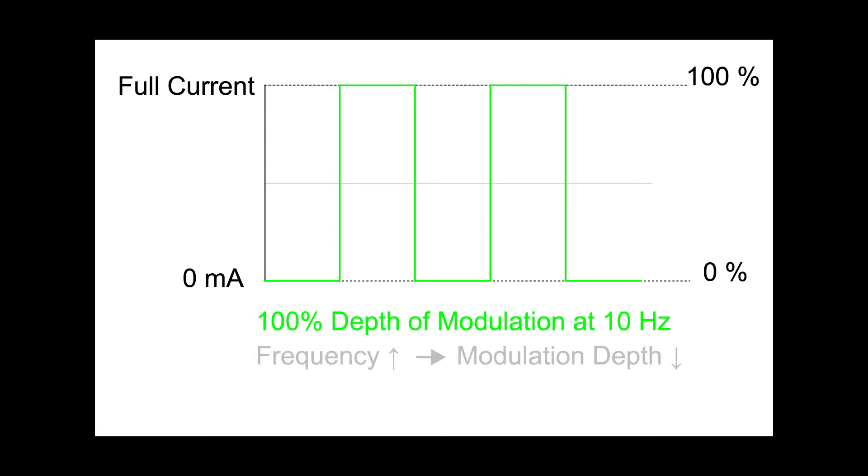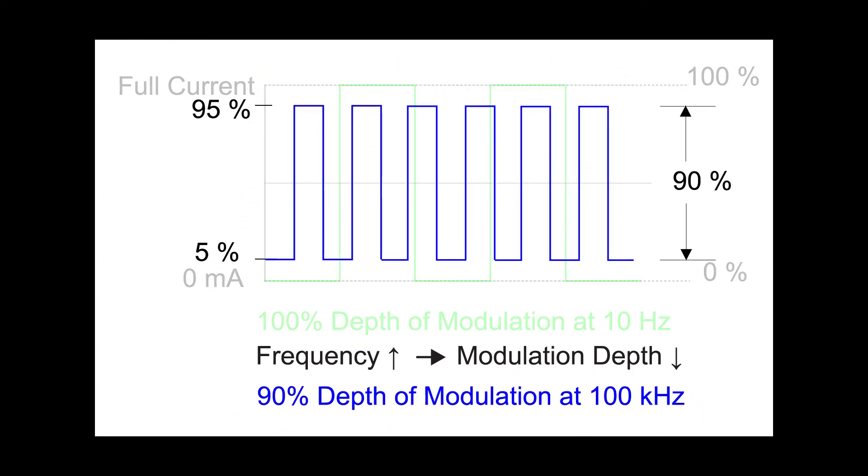Depth of modulation decreases as frequency increases. At higher frequencies, the peak-to-peak values will no longer get all the way to the rail. At 90% depth of modulation, a 5-volt peak-to-peak input signal will result in a 4.5-volt peak-to-peak change in Imon.